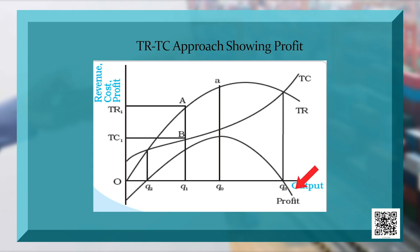After point Q3, profit declines as TC becomes greater than TR. This means in production of further output, the cost incurred by the firm is more than the profit it earns by selling that commodity.